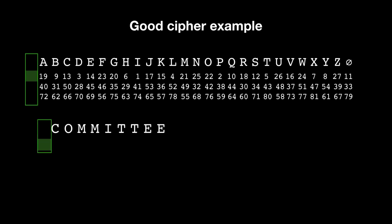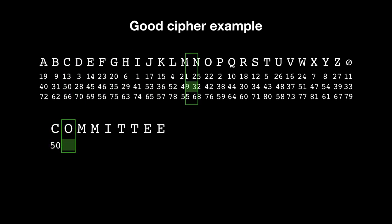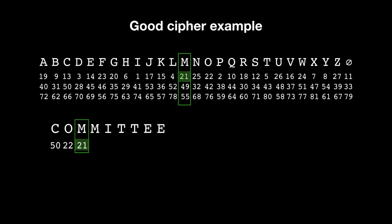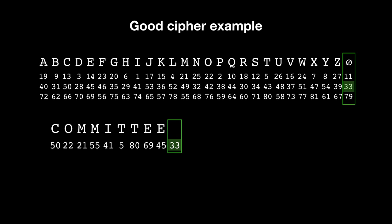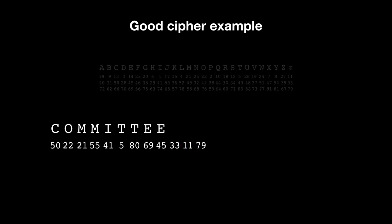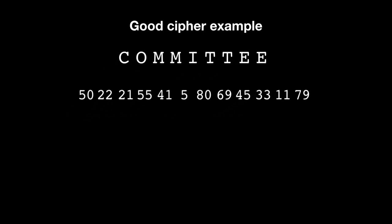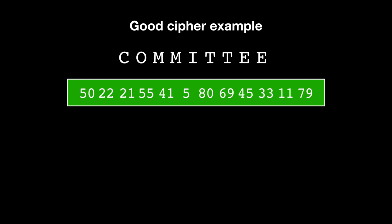Using this cipher we will encrypt the word 'committee' from the previous list. Starting with letter C, we have three numbers to choose from — let's choose 50. Then O, let's choose 22. Then M, we can choose 21, and for the next M it's important to choose a different one — let's go with 55, and so on. We should also include some extra numbers that have no meaning, and we can make this message three numbers longer to make it look like the word 'successfully', which is also on the list. This is the encryption: 'committee' encrypted as this number sequence.